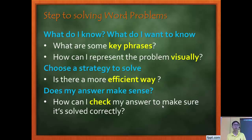Here are some steps for solving word problems. First, ask yourself: what do you know and what do you want to know? Identify key phrases and represent your problem visually — we're going to draw models to help us. Then choose a strategy to solve it, and ask yourself if there's a more efficient way. Finally, check: does my answer make sense, and how can you verify it's correct?